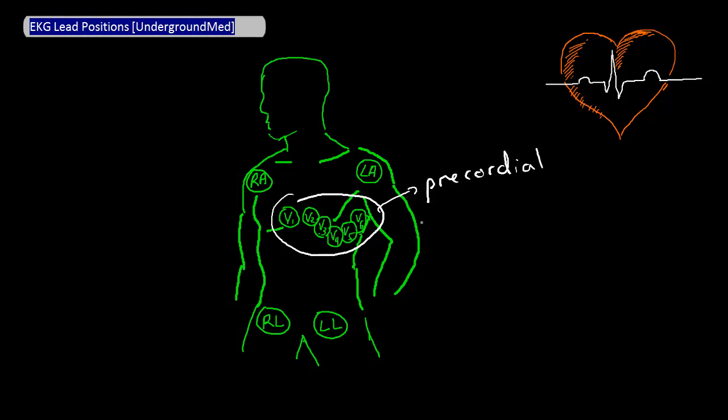They are also supposed to be six limb leads. Here we can see one lead on the right arm, the RA lead, one on the left arm, the LA lead, one on the right leg, the RL lead, and one on the left leg, the LL lead.